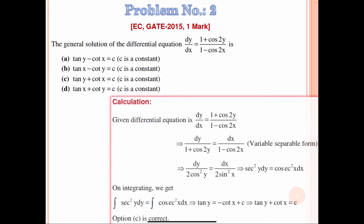We have four options. We can reduce this differential equation into variable separable form: dy / (1 + cos 2y) = dx / (1 − cos 2x). Now, 1 + cos 2y = 2cos²y and 1 − cos 2x = 2sin²x. This gives sec²y dy = sec²x dx, which is a variable separable form. Integrating both sides, we obtain tan y = −cos x + c.